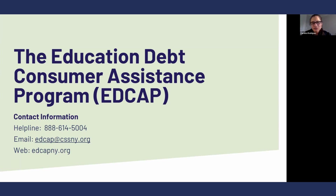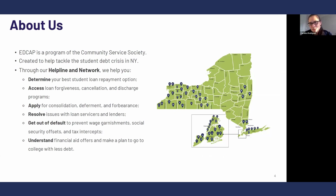Here's our contact information. You're going to have our contact information and a copy of this PowerPoint. We're going to send it along with a recording after the fact. This is everything we do. We are a program of the Community Service Society of New York, which is a longstanding nonprofit organization. Our entire goal is to help student loan borrowers in New York State manage and whenever possible eliminate student loan debt. We engage in different activities from helping borrowers explore forgiveness programs to helping them get loans out of default into good standing. We do have a network of community-based organizations providing the same services, and you can go to our website to see who our partners are in case you wanted local assistance.